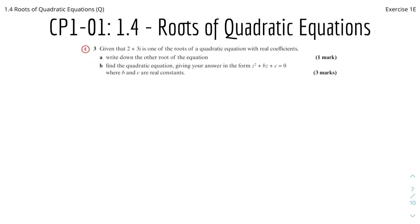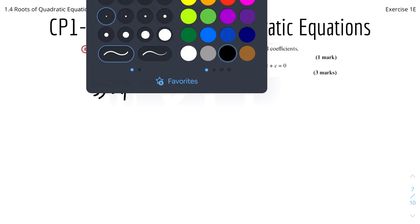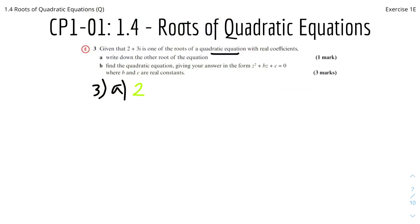Here's the first question, question 3. Given that 2 plus 3i is one of the roots for a quadratic equation with real coefficients, part a: find the other root of the equation. We know that every complex root comes in complex conjugate pairs, so the other root has to be the conjugate of 2 plus 3i, which is 2 minus 3i.